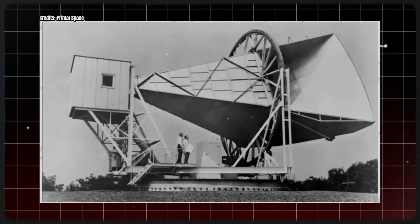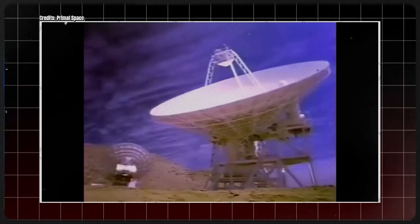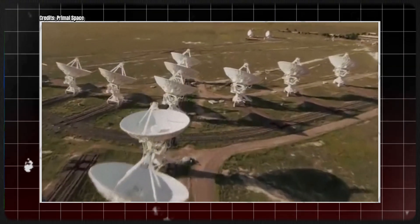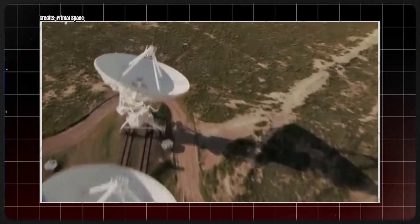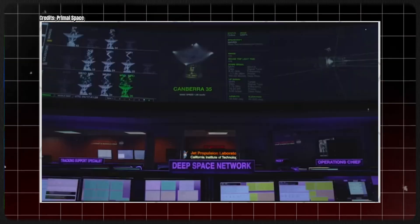As the Voyagers travel further away, their signals grow fainter. The world is filled with noise from radios, televisions, cell phones, and other devices, making it increasingly challenging to hear the faint transmissions from the spacecraft.